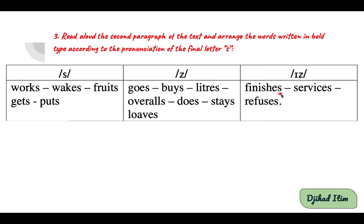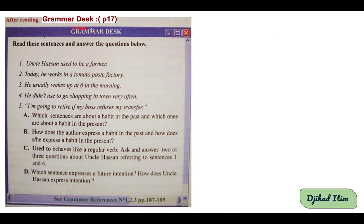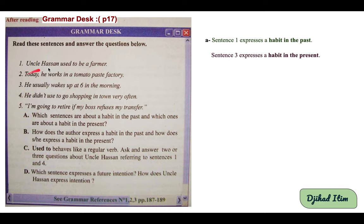Grammar desk, page 17. Read these sentences: Uncle Hassan used to be a farmer. Today he works in a tomato paste factory. He usually wakes up at six in the morning. He didn't use to go shopping in town very often. I'm going to retire if my boss refuses my transfer. Question A: which sentences are about a habit in the past and which ones are about a habit in the present? Sentence one expresses a habit in the past — 'used to' is used. Sentence three expresses a habit in the present — 'he usually wakes up at six.'